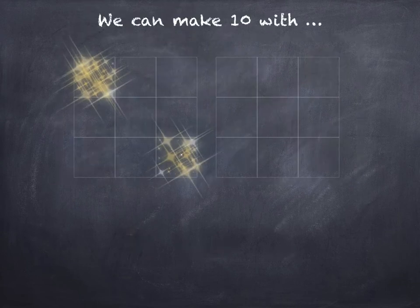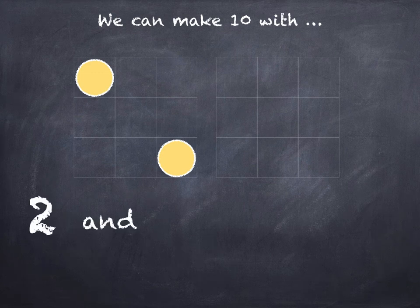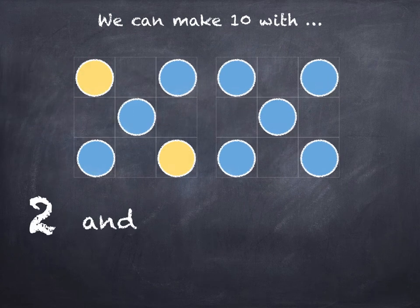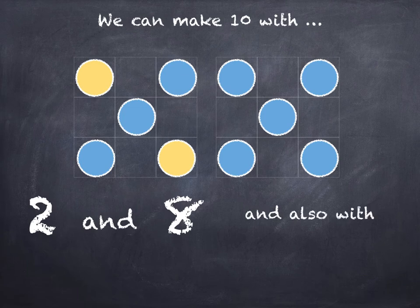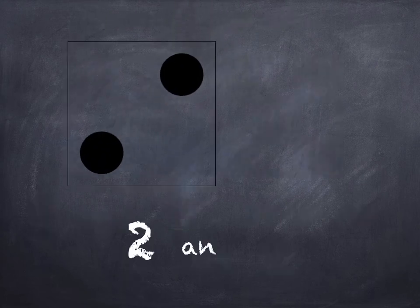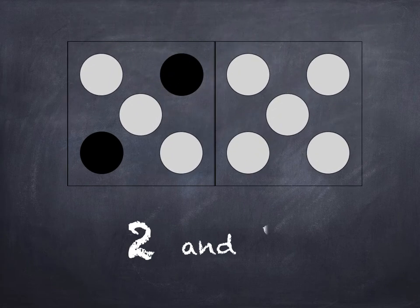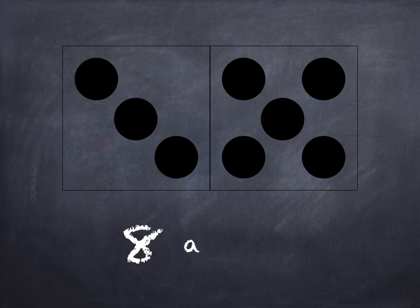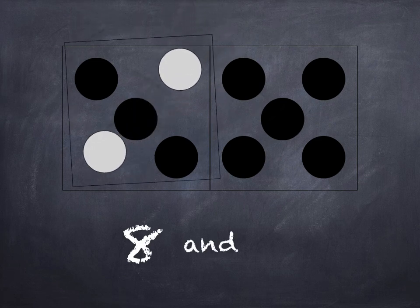We can make ten with two and eight and also with eight and two.